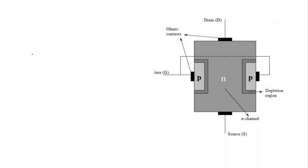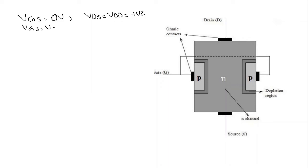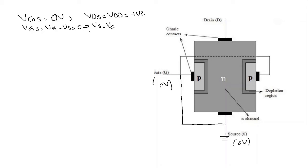Bismillahirrahmanirrahim, Assalamu Alaikum, welcome to Technically Explained. In the previous video we discussed the working of the junction field effect transistor for the condition where Vgs is equal to 0 volts. Vgs equals Vg minus Vs equals 0, which implies that Vg equals Vs. What we did was short circuit the gate terminal with the source terminal, and because Vgs was equal to 0 volts, we connected a ground over here, so this gate terminal is also 0 volts.